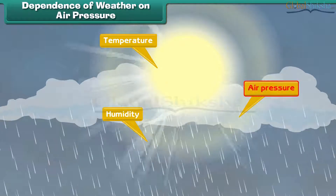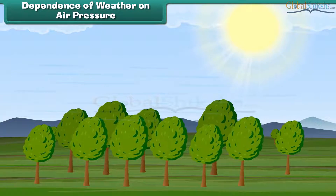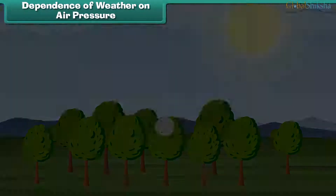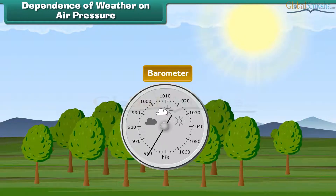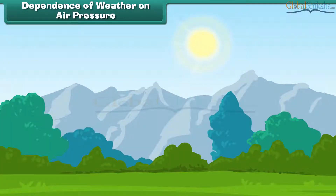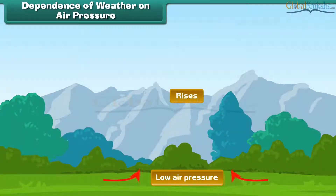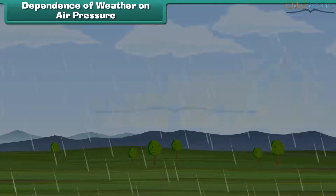Air pressure — you might not realize it, but the air around you actually has a weight. We measure air pressure with a device called the barometer. In areas of high pressure, the air slowly descends to the earth's surface, and high pressure areas are associated with clear sunny days. In areas of low pressure, air rises up into the atmosphere. Low pressure areas have high humidity, clouds, rain, and other kinds of precipitation.